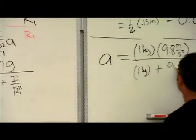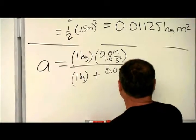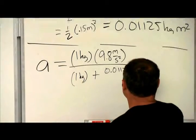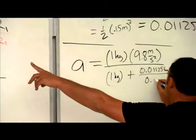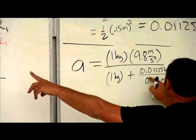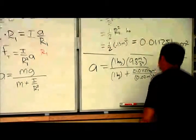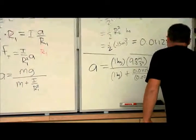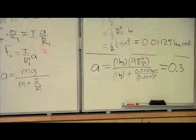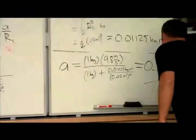All divided by 1 kilogram plus i over r1 squared, well, the i is the 0.01125 kilograms meters squared, all divided by r1, which we have as 0.02 meters squared. And if you plug all this into your calculator, you get a result of 0.33, I believe. I wrote it down over here, 0.34 meters per second squared.